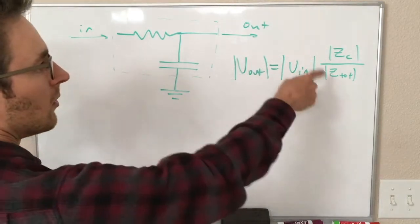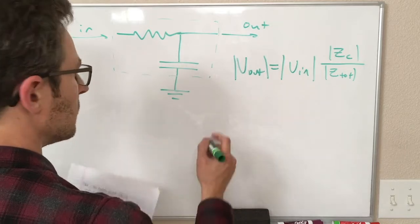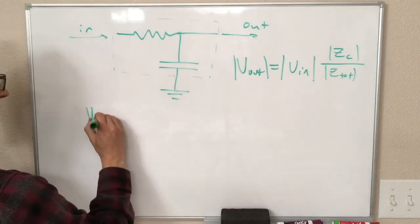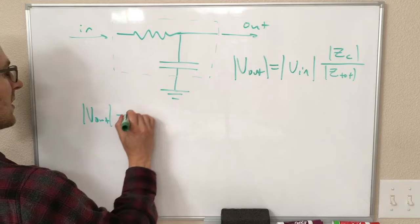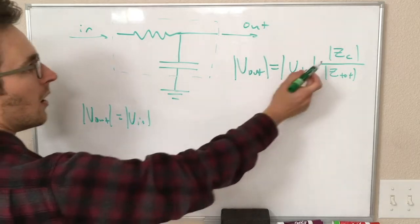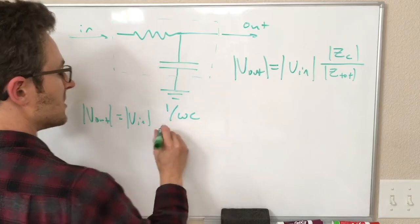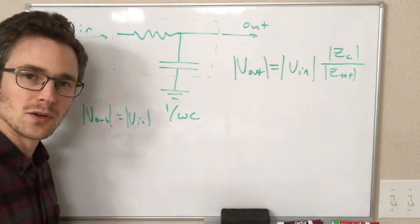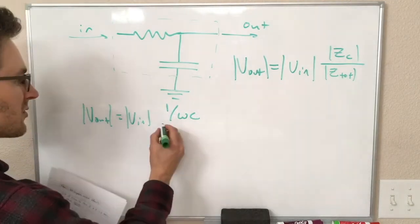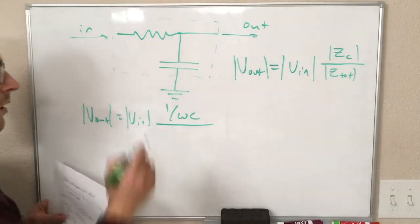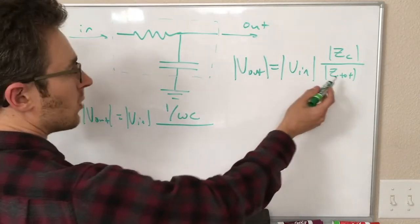We know what both of these are. We can plug in for those. I'm going to write this over here. Vout is equal to Vin. Our capacitor impedance is one over omega C. We're going to write this in terms of omega. Of course, you can substitute in two pi F for all of the omegas, and nothing changes.